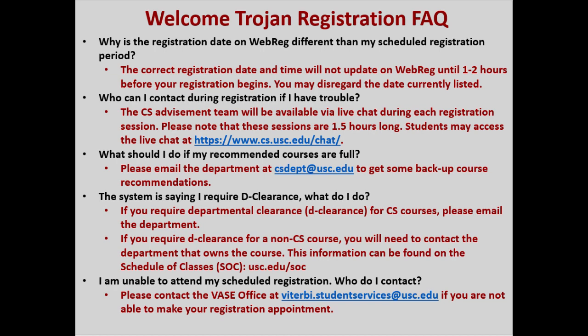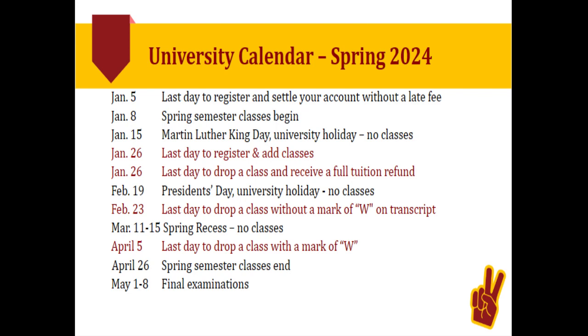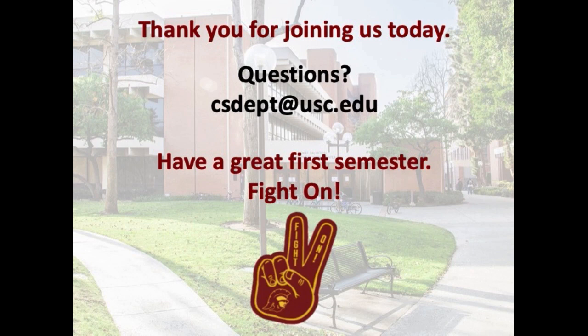If you are not able to attend your scheduled registration period, we recommend that you contact the Viterbi office at viterbi.studentservices@usc.edu. Students can find important dates and deadlines on our university calendar for the spring 2024 term. The dates indicated in red are registration deadlines to withdraw or adjust courses. If students have any questions regarding these dates and deadlines, you will have an opportunity to speak with your assigned advisor.